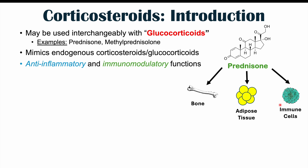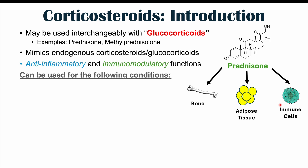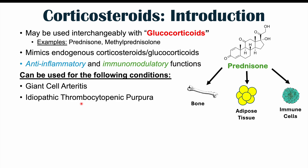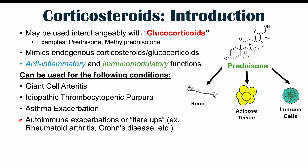That is why prednisone and other corticosteroids are used for autoimmune conditions. Some conditions they can be used for include giant cell arteritis — especially important because as soon as there's clinical suspicion, we prescribe systemic steroids to reduce the risk of blindness — idiopathic thrombocytopenic purpura, which is an autoimmune condition causing suppression of platelet counts, asthma exacerbations, and autoimmune exacerbations or flare-ups in conditions like rheumatoid arthritis, lupus, and Crohn's disease.